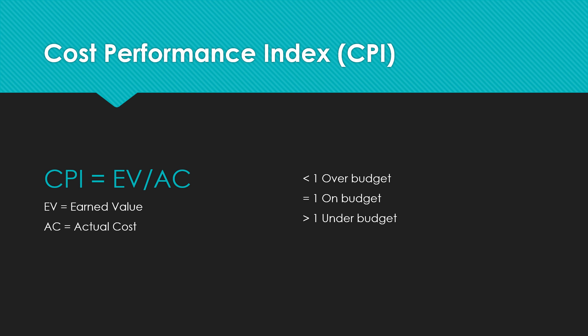CPI is cost performance index, and CPI is equals to EV divided by AC — earned value divided by actual cost. If CPI is less than 1, your project is over budget. If CPI equals 1, you are on budget. If CPI is greater than 1, your project is under budget. There could be a question which says the CPI of your project is 1.6 — that means 1.6 is greater than 1, so your project is under budget.